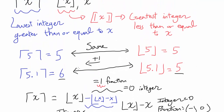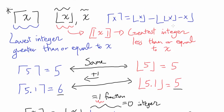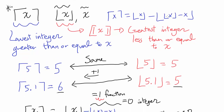So we are done. The ceiling function in terms of the floor function is going to be: floor of x minus floor of floor of x minus x. And we are done.